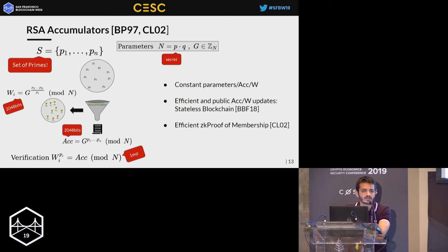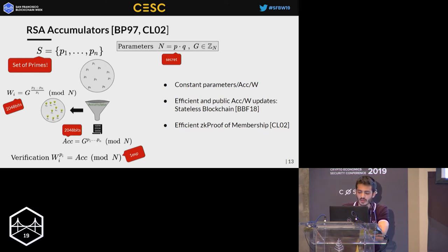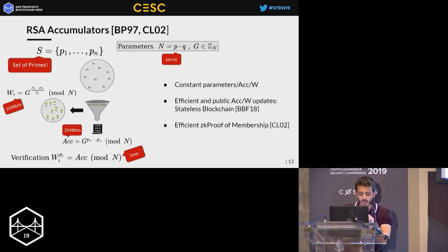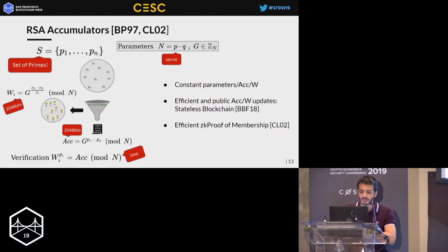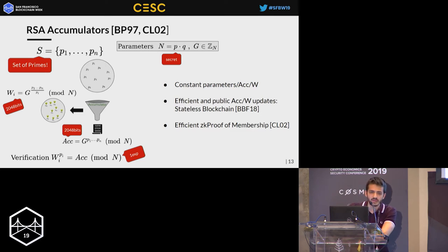The main benefits of RSA accumulators that drew our attention are: first, everything is constant-sized — parameters, digest, witnesses. Second, in a recent work by Boneh, Bünz, and Fisch, they showed RSA accumulators can build a stateless blockchain, providing a mechanism so nobody in the network needs to store the UTXO set. Third, there already exists an efficient zero-knowledge proof for set membership using RSA accumulators.